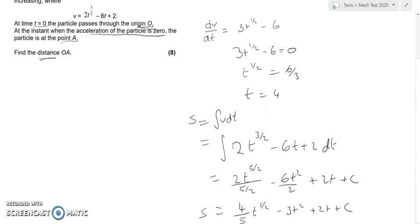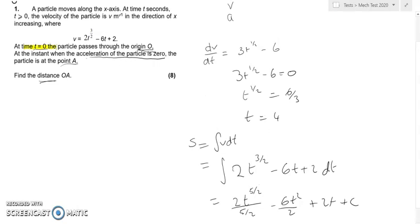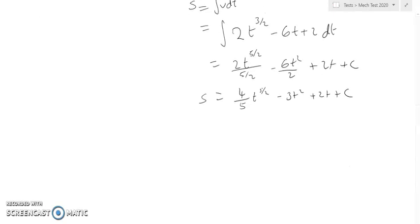This is where this information comes in handy. It told us that at time t equals 0, it passes through the origin. So at t equals 0, the displacement from O is also 0. If I sub in 0, this is going to be 0 minus 0 plus 0 plus c. Therefore, c must be 0.